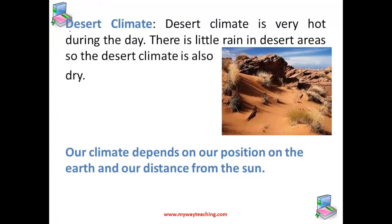Now let us talk about the desert climate. Desert climate is very hot during the day and there is very little rain in the desert area. So the desert climate is also dry, like the polar climate, which is also very dry.